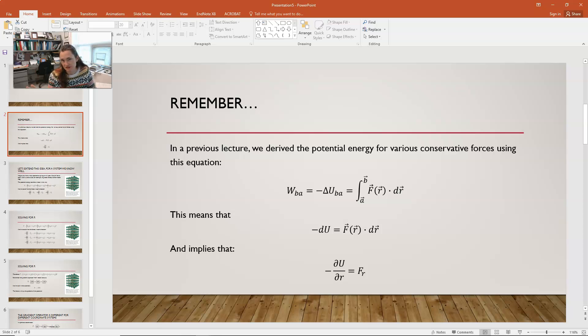Now, that's the definition of work, but then we added on to it that for a conservative force, this is also equal to the negative change in the potential energy, and then we used that to derive the potential energy function for conservative forces like spring and universal gravitation.